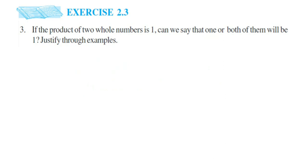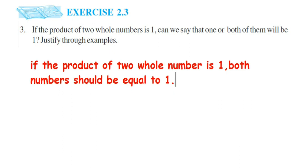In this statement they have given that one or both numbers have to be equal to 1. So it's not one number - it should be both numbers that have to be equal to 1. If the product of two whole numbers is 1, both numbers should be equal to 1. If only one number is equal to 1, that is not possible.